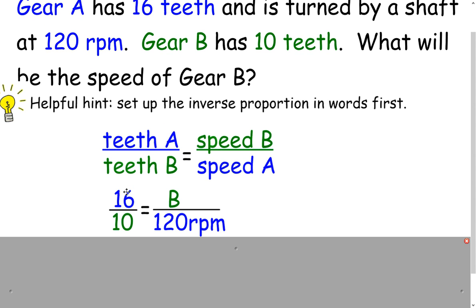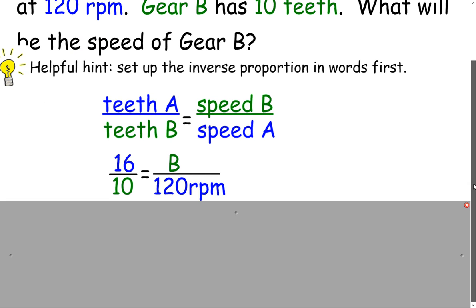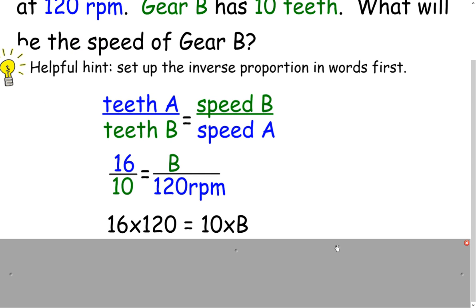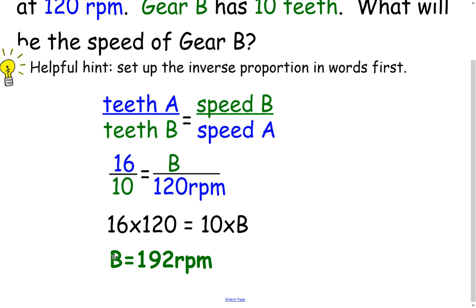So let's look at, we got 16 over 10 and 120 on the bottom. 16 and 120 go together, so those are our A's. 10 and B are our B's. We cross multiply: 16 times 120 equals 10 times B. And we solve it and we end up getting that B is 192 RPM.